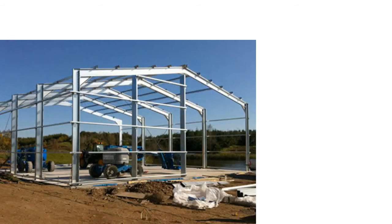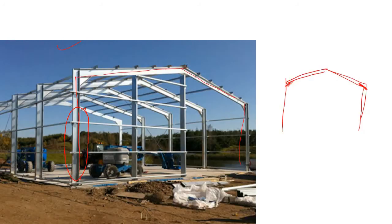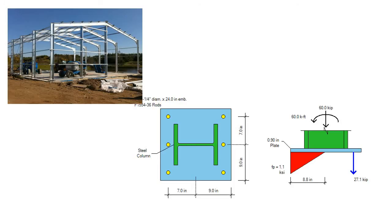Consider a simple steel frame structure where I-sections or wide flange sections are used as columns. Looking at the frontal or transverse frame, under the action of a lateral load, a bending moment will develop at the base of each column. To carry this bending moment, you provide a fixed base. Here, the bending moment is being applied about the major axis of the column.